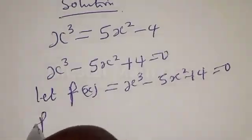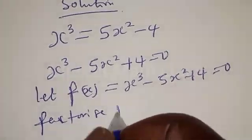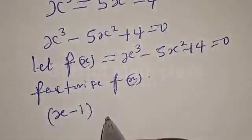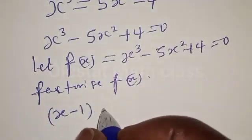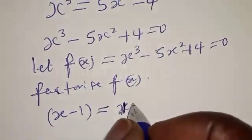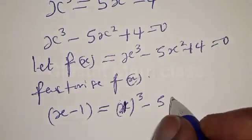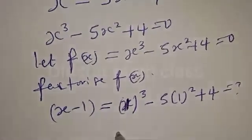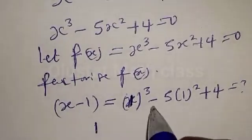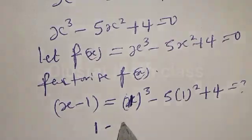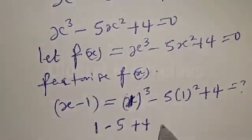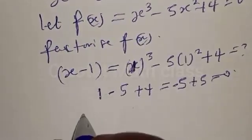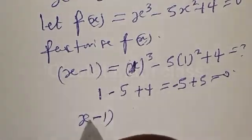Now let's factorize f of s. We want to try s minus 1 to know if it is a factor. Then we have f(1): 1 cubed minus 5 times 1 squared plus 4, which is 1 minus 5 plus 4, equal to 0. Therefore s minus 1 is a factor.